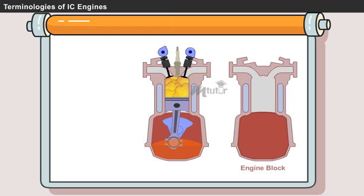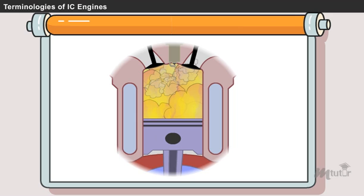This is the engine block, which provides the foundation for all the engine's components. The inside diameter of the cylinder is called bore. It is measured in millimeters.